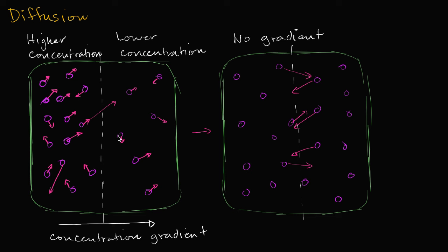I really want to make that point clear — you can still move from right to left. For example, it's completely possible that a molecule goes from right to left. It's not like everything is moving from left to right, but you have a higher chance of more things moving from left to right. Because there's just more stuff here and they're all bouncing around in all different random directions.